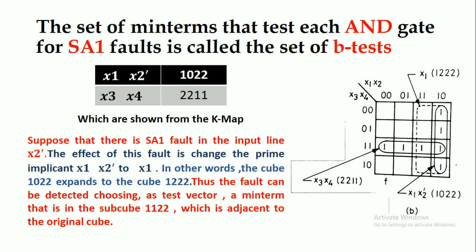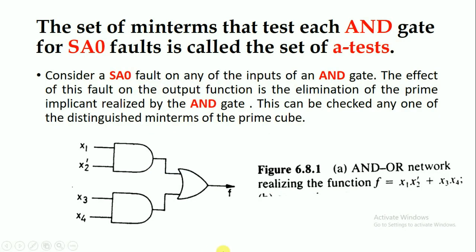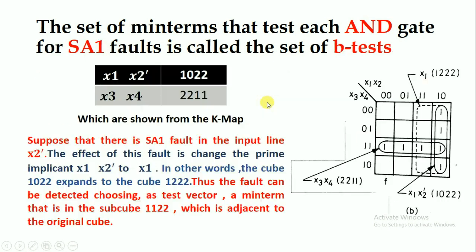Next we will find out the B test. The B test is used for detecting the stuck-at-one fault. The boolean function f is given as x1·x2' + x3·x4, where x1 is one, x2 dash is zero, x3 is one, and x4 is also one.